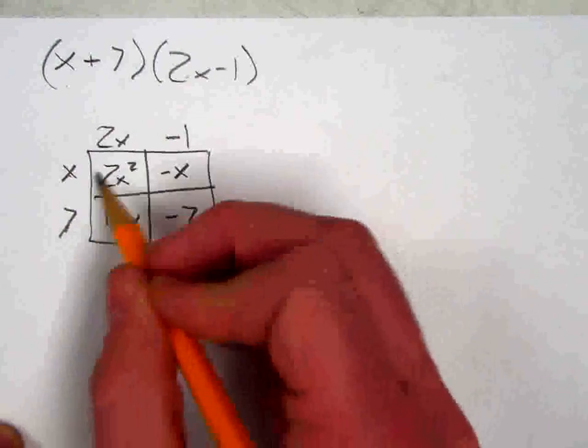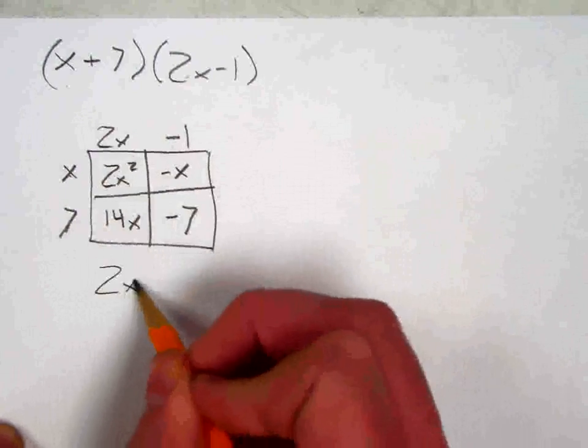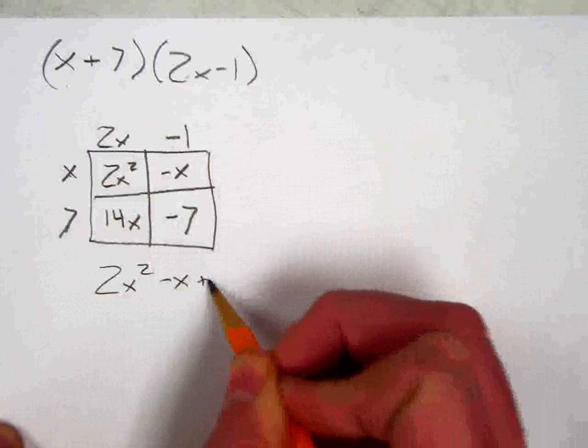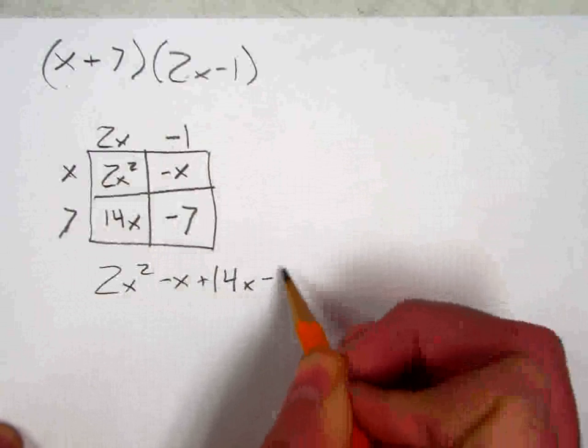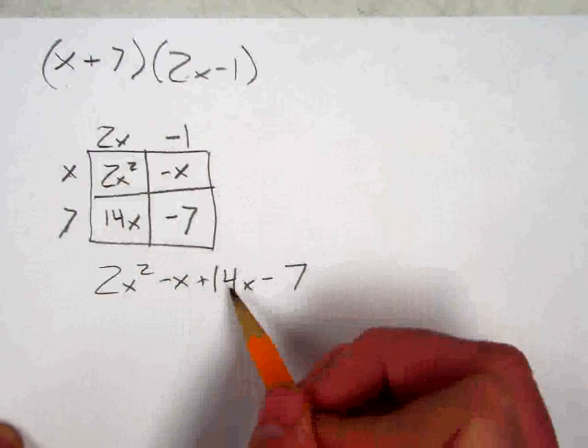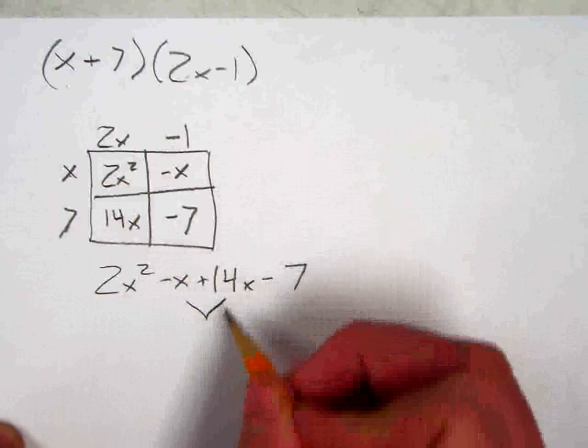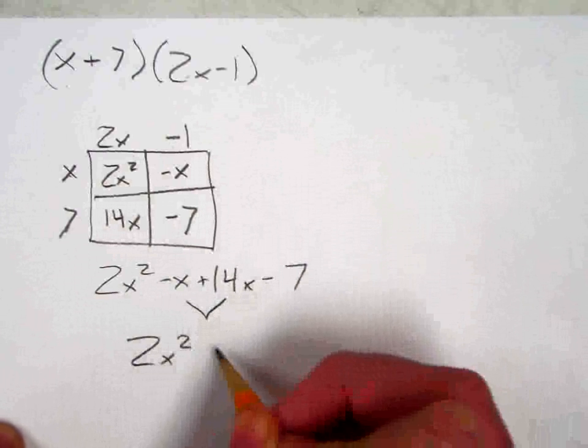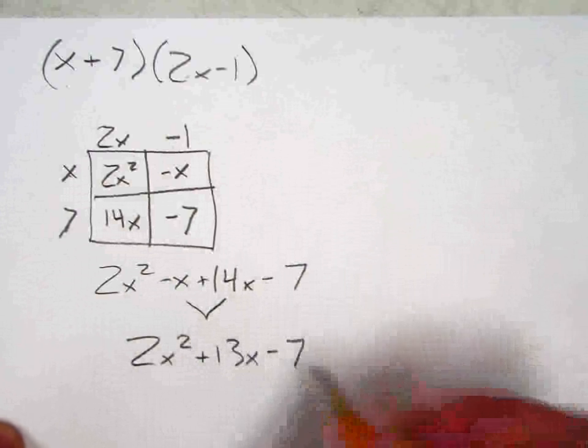My factors are on the outside. Inside the box is my product, so there's just a small amount of simplification that I need to do. I know that negative x and plus 14x are like terms, so I can combine those, and my final product is 2x squared plus 13x minus 7.